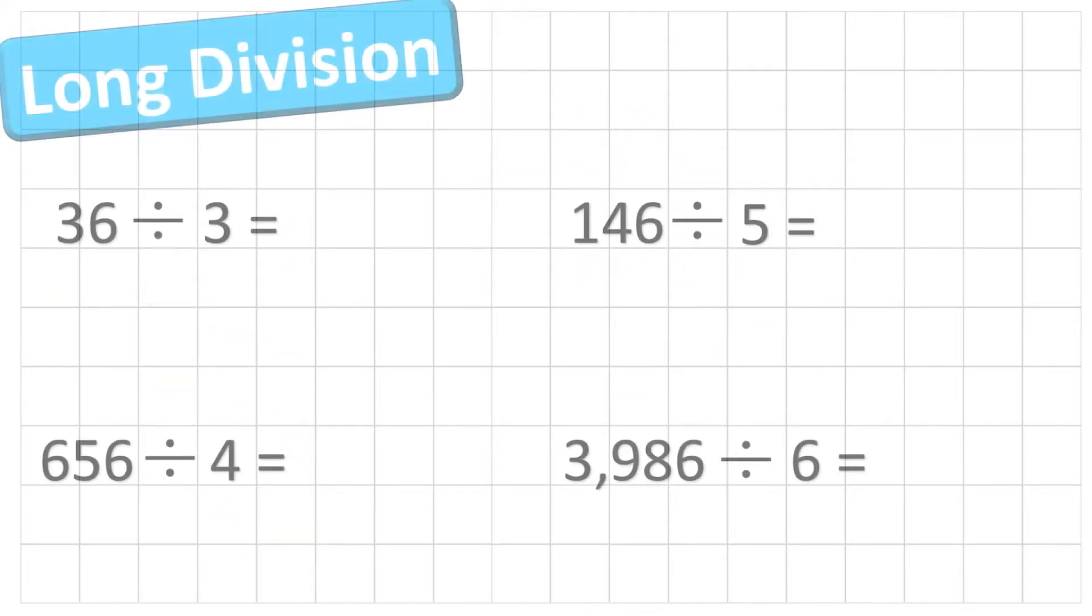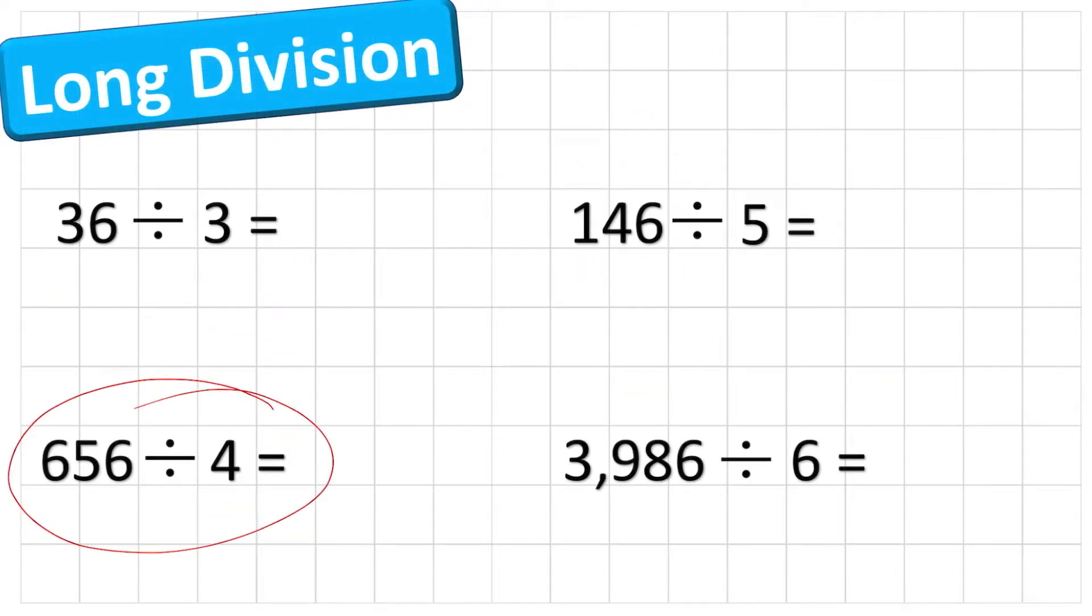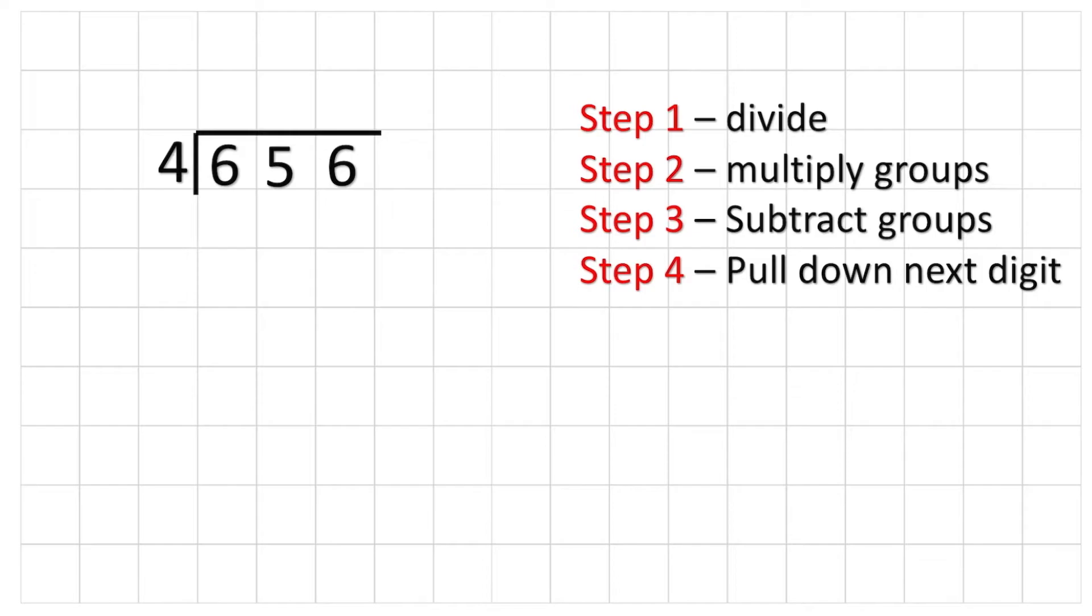Let's move on to a slightly harder question. Let's have a look at this question here. 656 divided by 4. So we're going to have the same steps again. And I'm going to put my dividend of 656 inside my bus stop and my divisor 4 on the outside. And I can just do the same thing again.